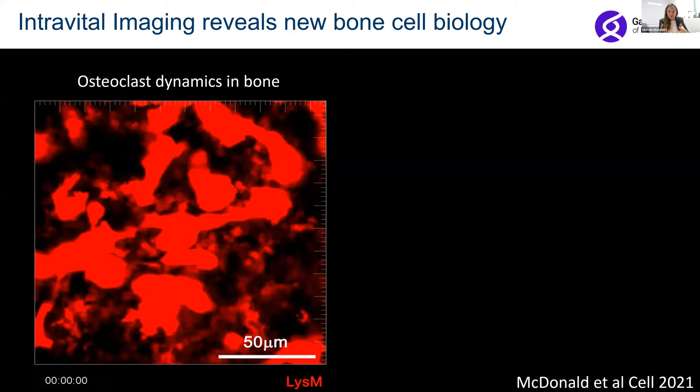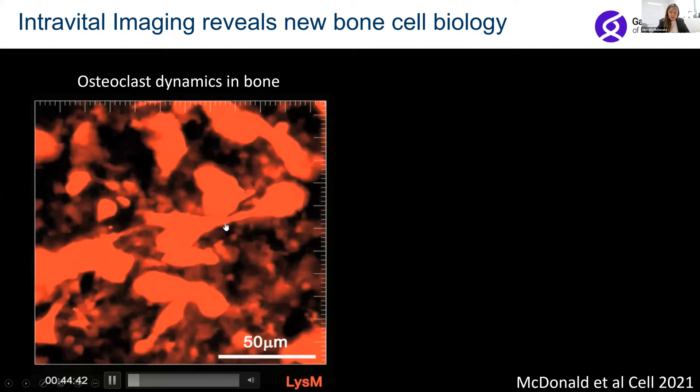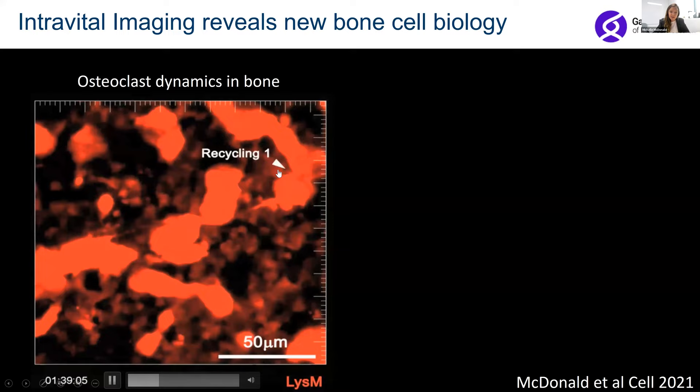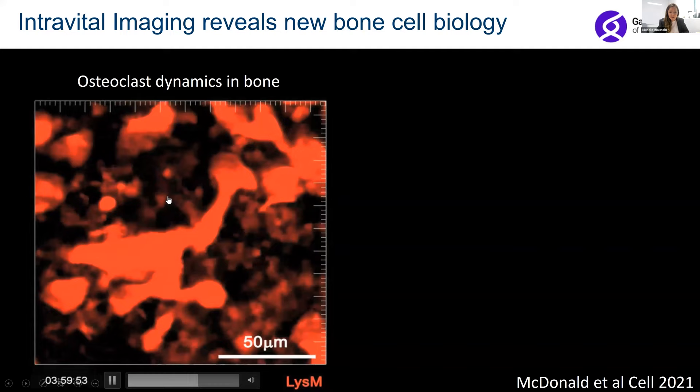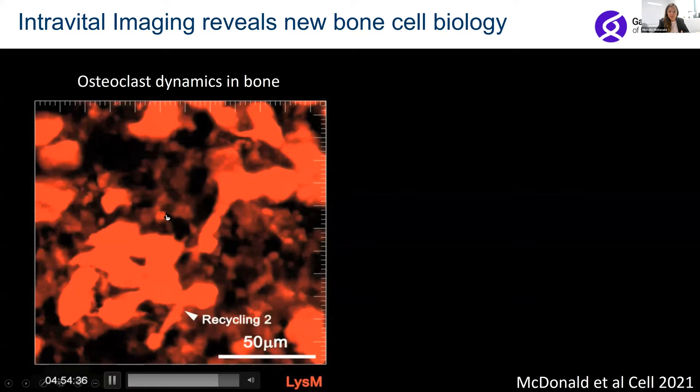The next step was to look at how these cells behave in real time — to make videos and watch them actually move around inside bone. What we've learned this year using this approach is that osteoclasts behave in a really different way to what we previously understood. These large red osteoclasts are undergoing cycles of self-fission and fusion — they break up to form smaller cells, and then refuse to make larger cells with other osteoclasts. We call this osteoclast recycling.